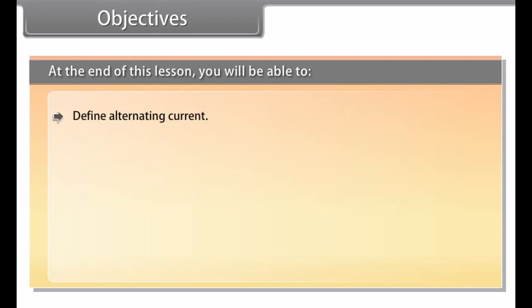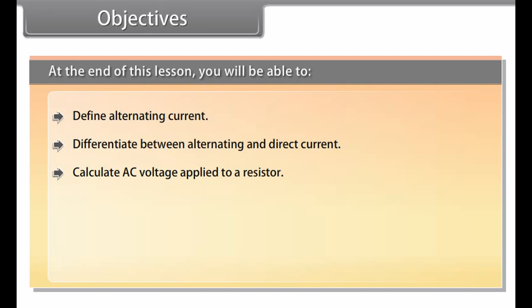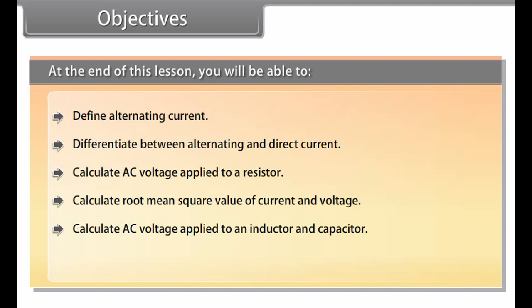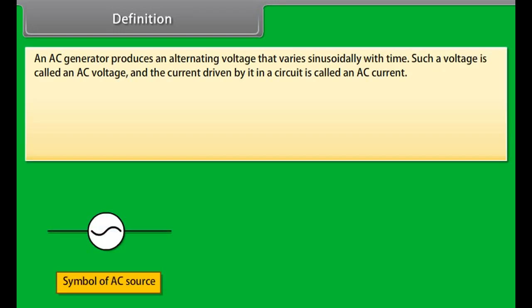At the end of this lesson you will be able to: define alternating current; differentiate between alternating and direct current; calculate A.C. voltage applied to a resistor; calculate root mean square value of current and voltage; and calculate A.C. voltage applied to an inductor and capacitor.